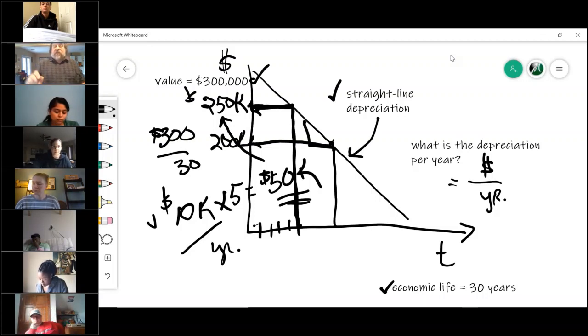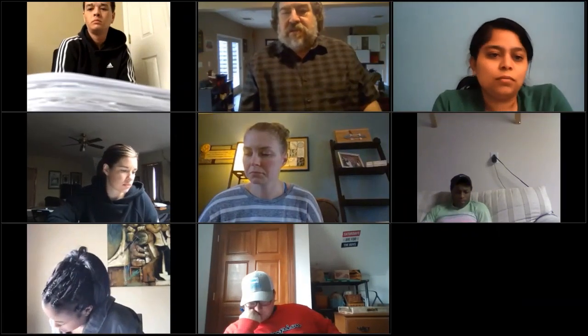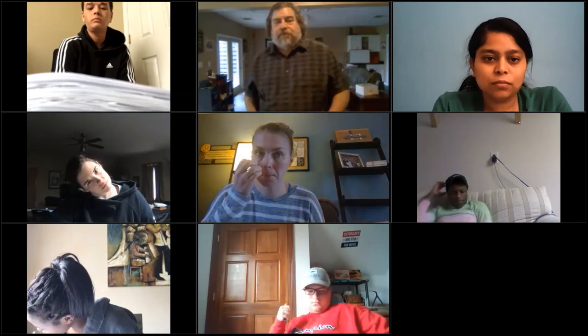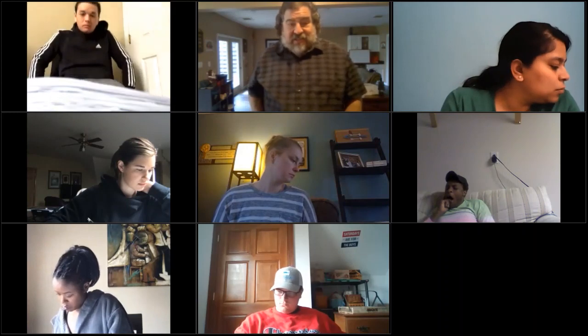You go up five years, hit that, and go over to that value. If we did 10 years, it would be $100,000 depreciated, so now it's only worth $200k. Got it? Got it. Obviously, if you did 30 years, you could see 30 years times 10 is 300—that's where it crosses that line, it's worth zero. But once again, it's truly not worth zero; that's the depreciation on it. Thumbs up?